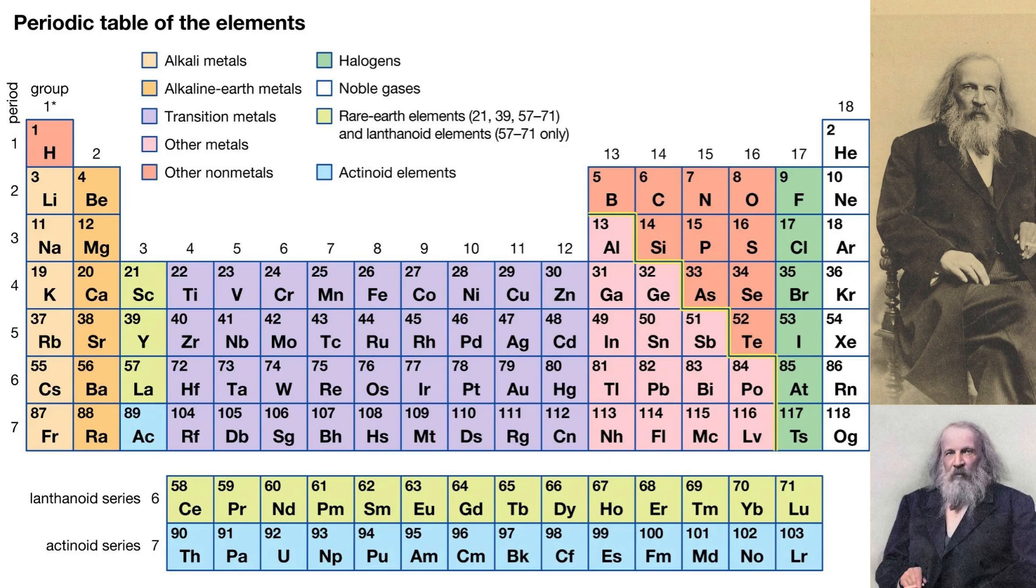These have been organized into a chart known as the periodic table. This table was first devised in 1869 by Russian chemist Dmitri Mendeleev, who organized elements with similar properties into groups. The elements are arranged by the size of their atoms.